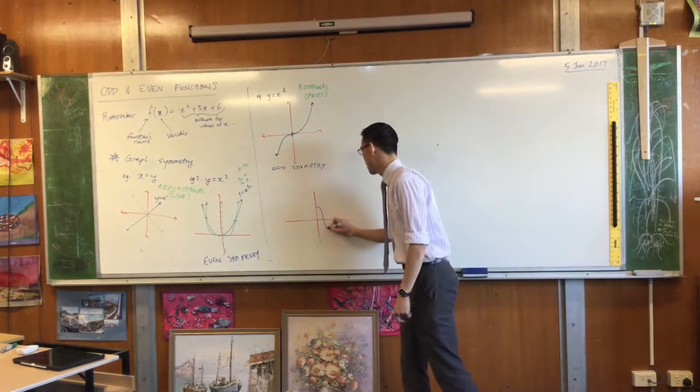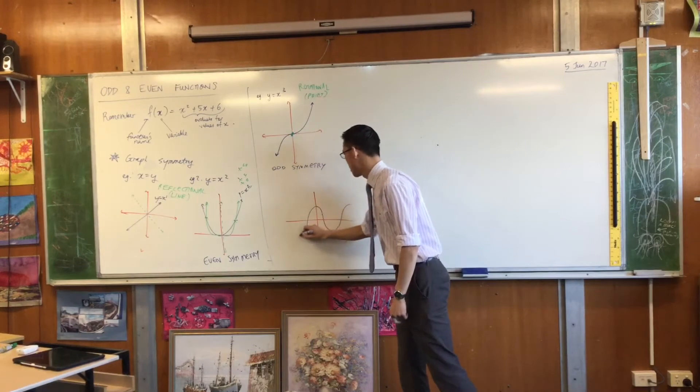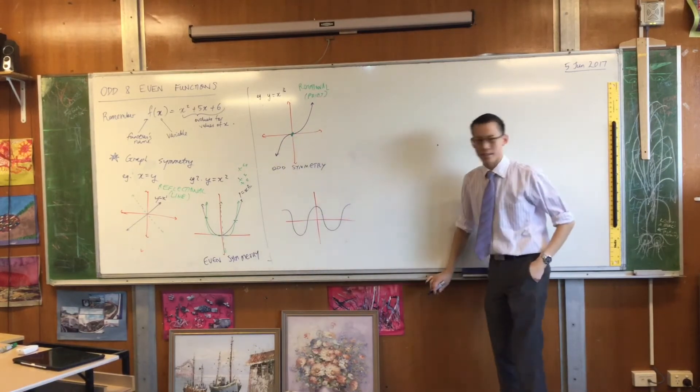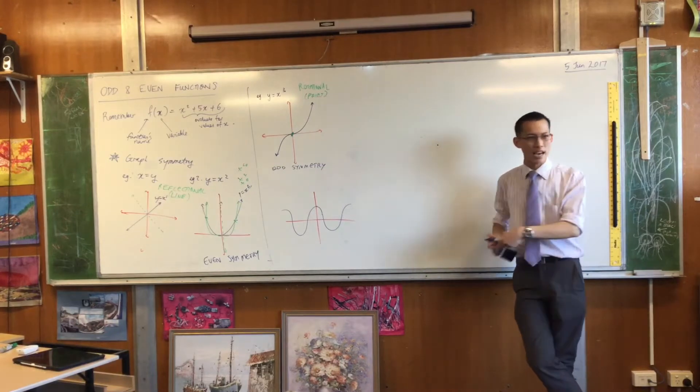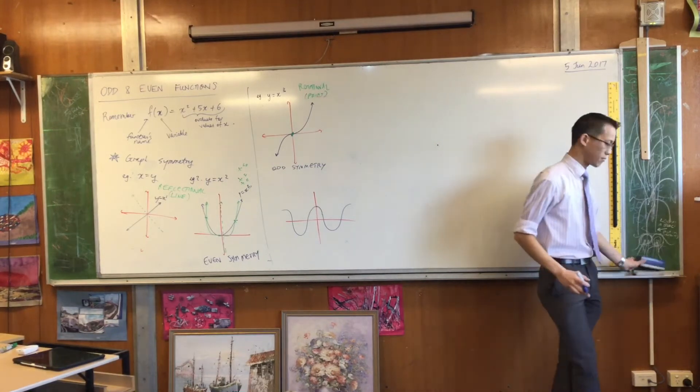Cos x. There's cos x, it's a pretty terrible cos x, but you get the idea. What kind of symmetry does this have? Look at odd and look at even. Which one is it?